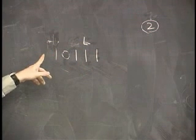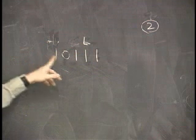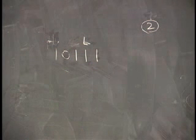23? 23. So 23 divided by 3 leaves a remainder of 2. Good. Okay. Let's run a machine to do this.